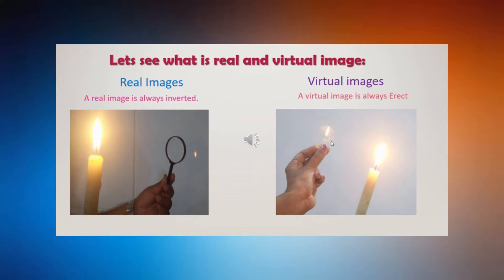So, what is an image? It is a virtual representation of an object. The best example is when you go and stand in front of the mirror at your home — you are able to see a virtual representation of yourself. That is called an image.